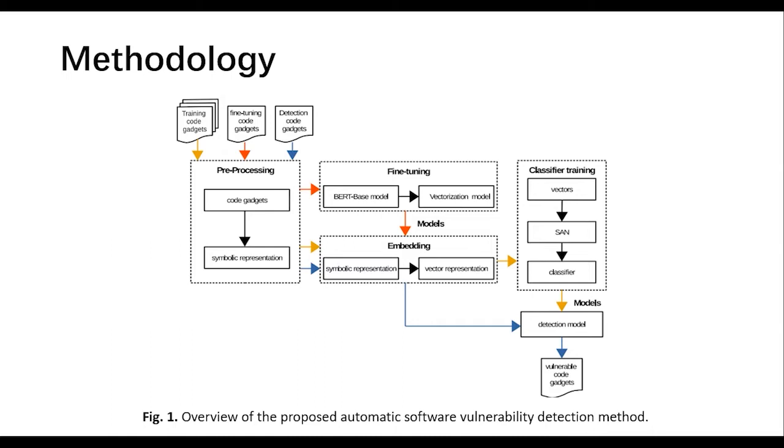The output of the fine-tuning stage is used as the model for representation learning in the next two stages. It transforms the symbolic form of source code into a real vector value in the embedding stage. Finally, in the classifier training stage, the detection model is trained and will be applied to predict whether the test samples are vulnerable or not.